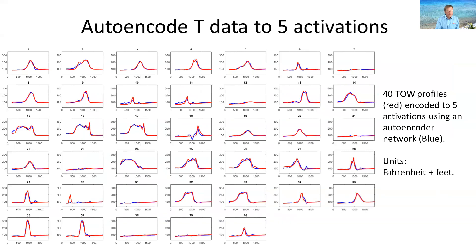Here are the results of the autoencoder for the larger site with 40 data points using five activations. Pretty much all these temperature profiles — shown in red — can be encoded quite well. There are a few anomalies: number 18 seems to have some problems, and another case where the autoencoder missed a small hot zone. However, consulting the temperature logs in more detail revealed that this particular log was not very reliable and the discrepancy is most likely an error in the data.